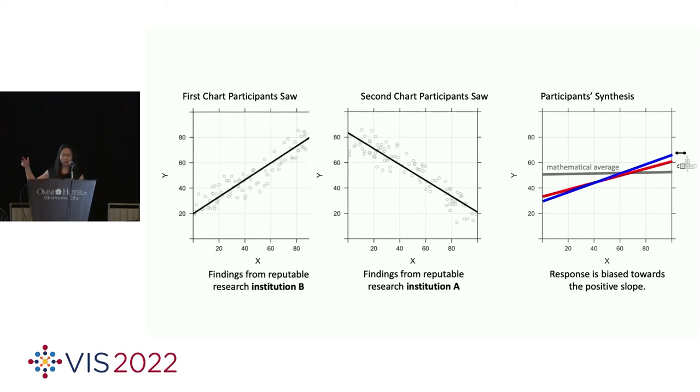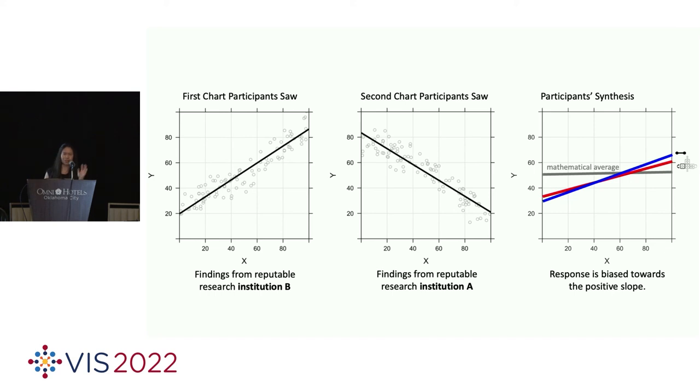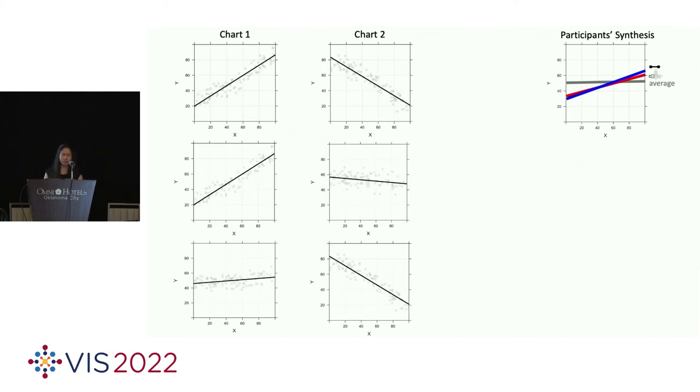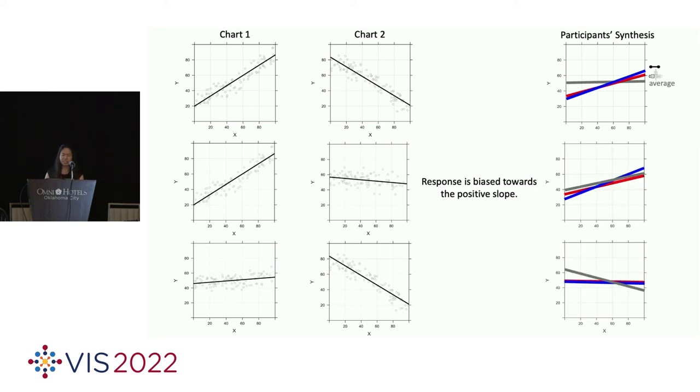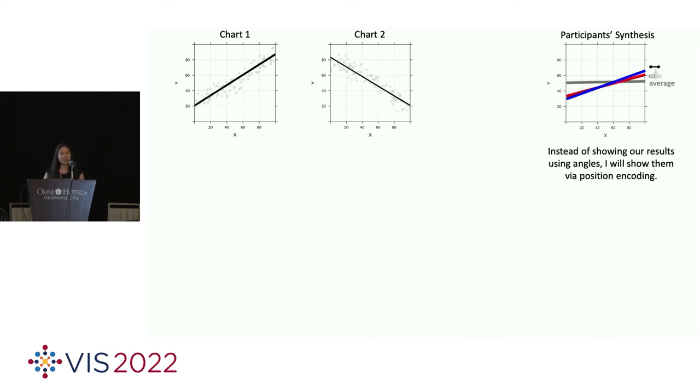So, participants seem to be biased to see the slope as more positive than the mathematical average of the two slopes. And, of course, we did our thing where we counterbalanced and controlled for everything. But from now on, I'm just going to refer to them as chart one and chart two. And we tried a bunch of variations where we picked two slopes that are in opposite directions against each other. And we see very consistent results in their response where people are biased to see the slope, the synthesized slope as more positive. And being a perception researcher, it might be, I understand, it might be a little bit hard to see that result from these slopey angles because angles are not the most perceptually accurate visual encoding channel.